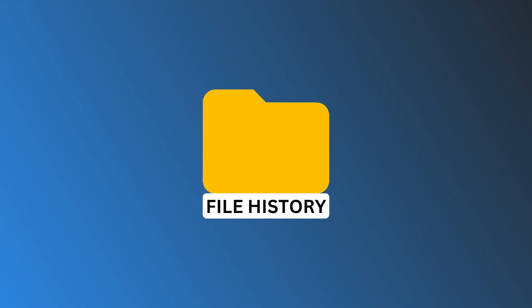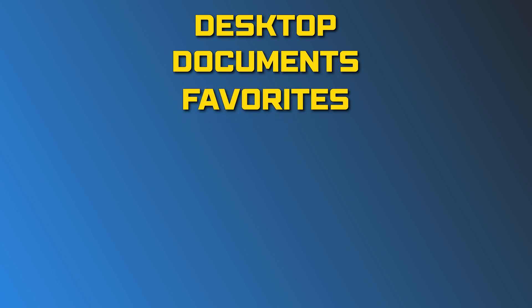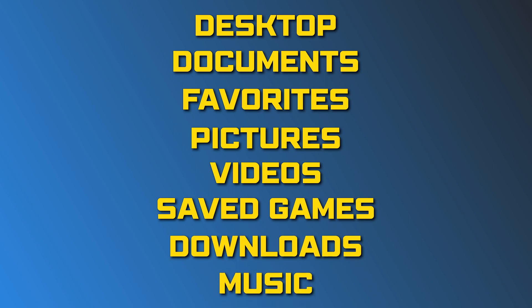This is the Windows Club. File history feature in Windows PC helps to save copies of files stored on the desktop, documents, favorites, pictures, videos, saved games, downloads, music, and other locations to a network location or an external drive.